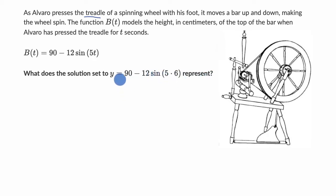All right, so it looks like right over here we have 90, 12, and we're subtracting 12 sine of 5 times t, 5 times t. So this right over here is t.